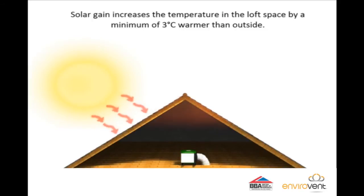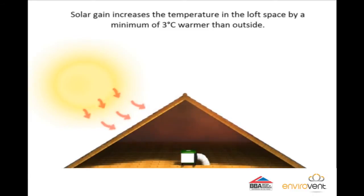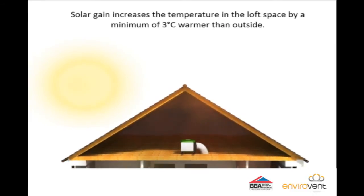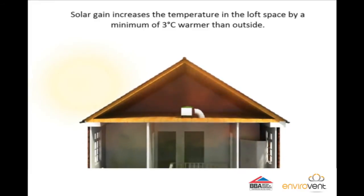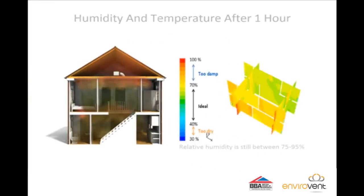The unit is switched on and the fresh filtered air enters the home through the centrally located ceiling mounted diffuser. The air is introduced along the underside of the ceiling and begins to mix with the warm contaminated air.